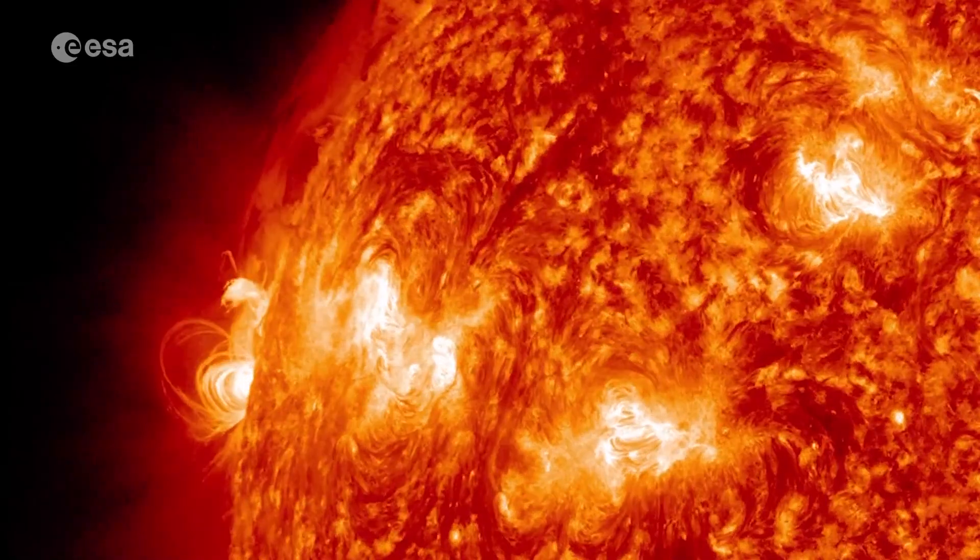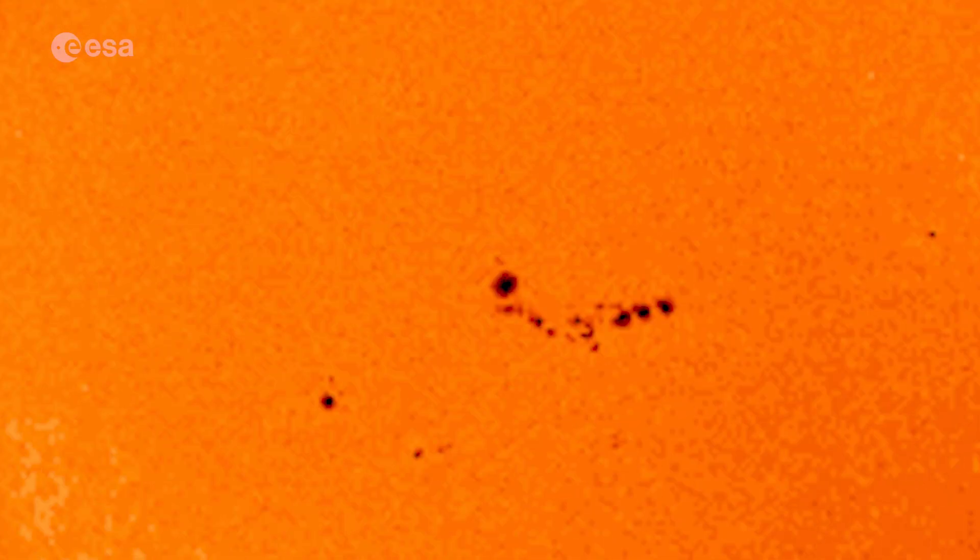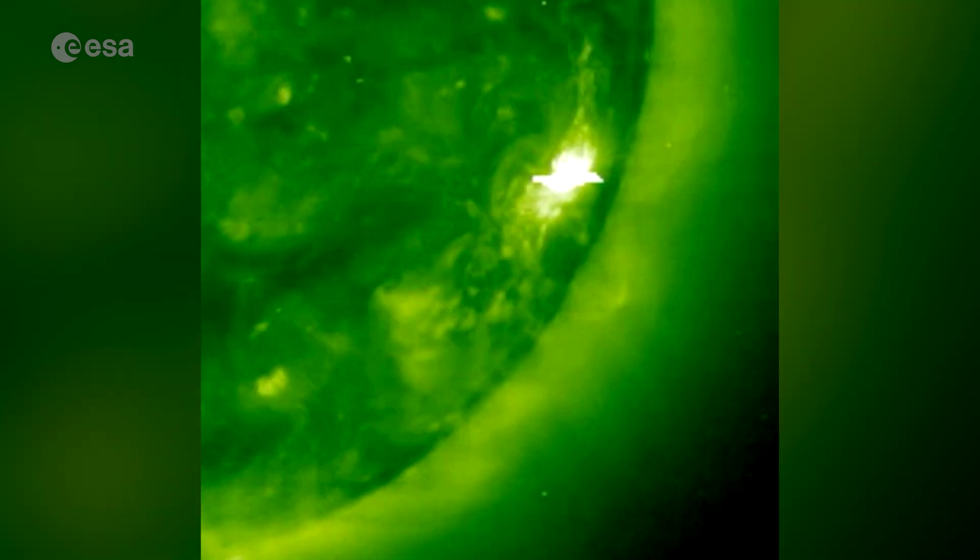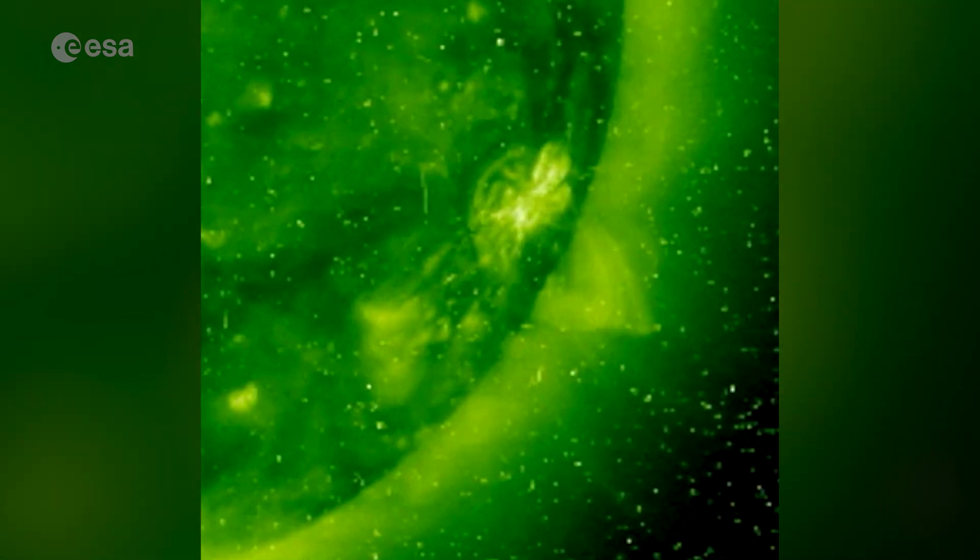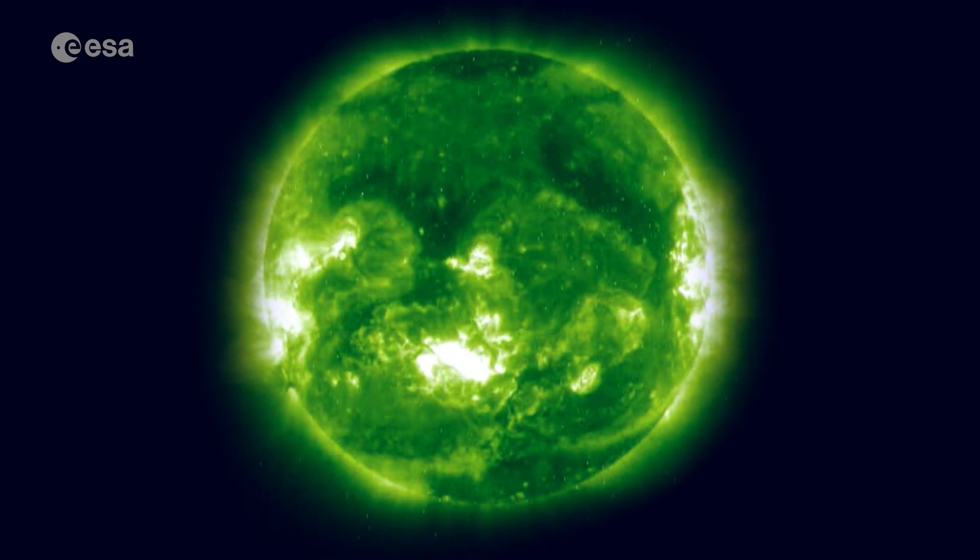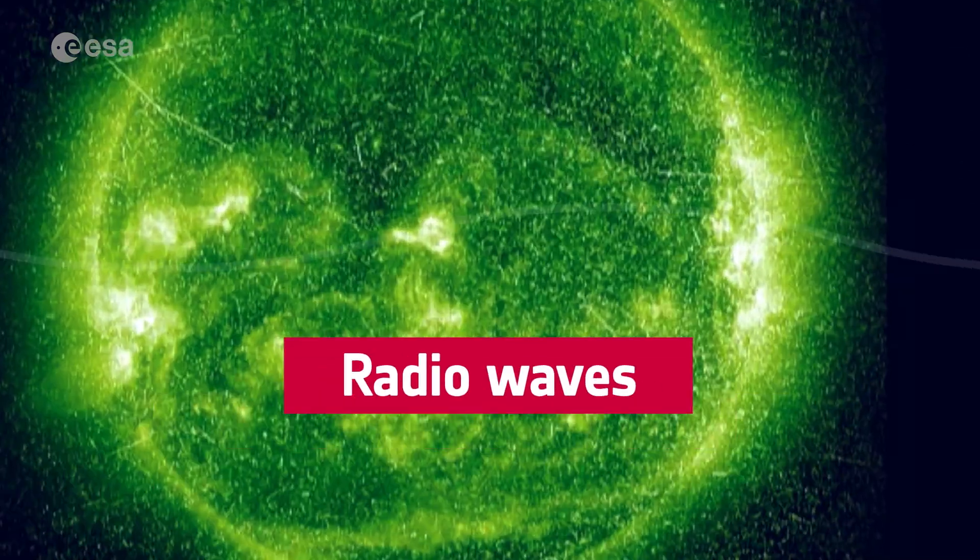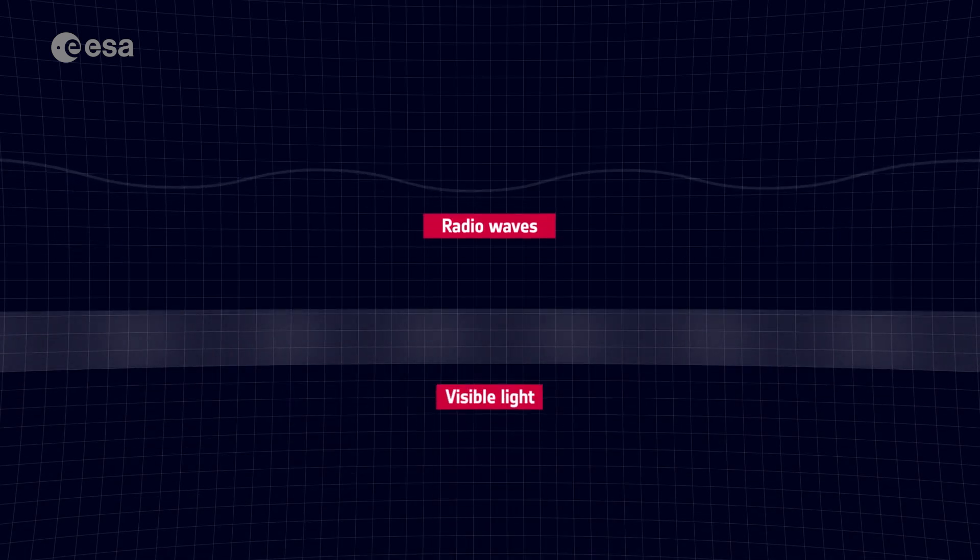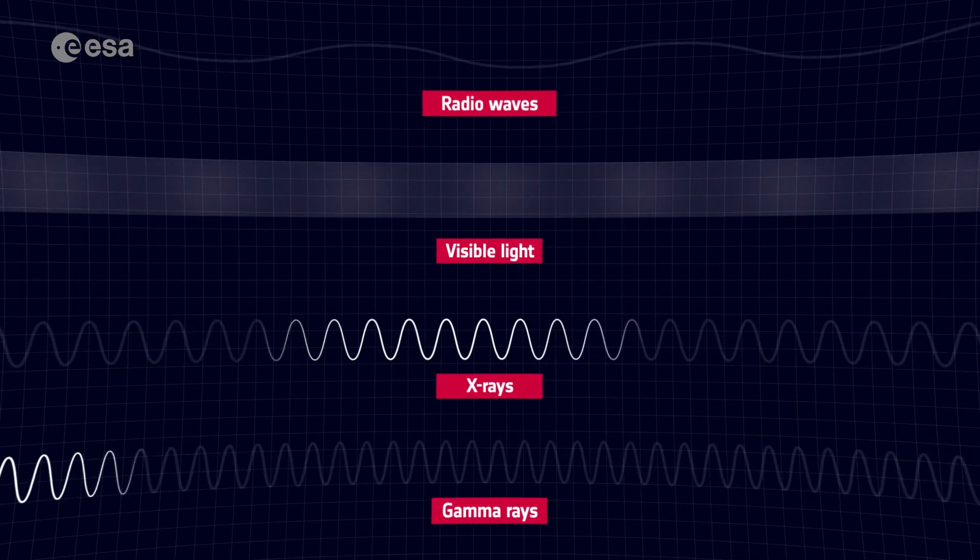Sunspots and active regions, dark patches on the solar surface, can erupt with solar flares that release tens of millions of times more energy than a volcanic eruption on Earth. Flares emit energy across the electromagnetic spectrum, from low-frequency radio waves to visible light, up to high-energy X-rays and gamma rays.